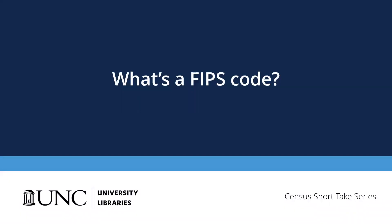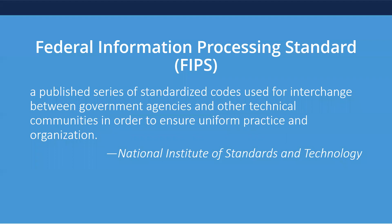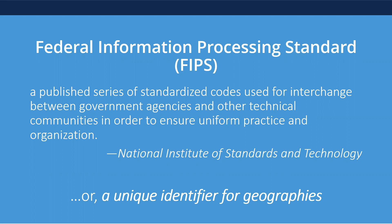Welcome to the UNC Library's Census Short-Take Series. What's a FIPS code? FIPS stands for Federal Information Processing Standard. You can think of a FIPS code as a unique identifier for a geography, just like a social security number is for a taxpayer or an ORCID ID is for a researcher. It's a quick, standard way to refer to a specific geography.